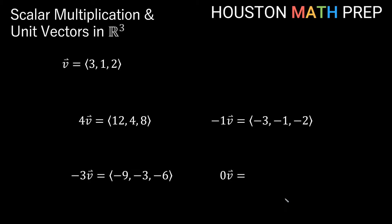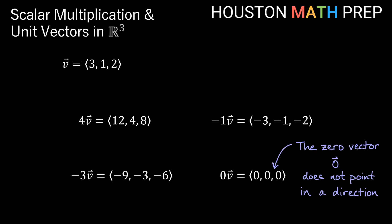For our last example, 0 times vector v — multiplying any vector by 0 gives us a vector with 0 for every component. We call this a zero vector. The zero vector is simple but a little strange since it literally goes nowhere. It doesn't technically have a specific direction, so we won't spend too much time thinking about whether it's parallel to the original vector v.